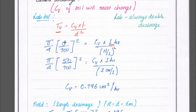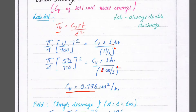Substituting values: TV = π/4 × (U/100)² = π/4 × (50/100)², and CV × 1 hour divided by (H/2)², where H = 2 centimeters. Solving this, we get CV = 0.196 cm²/hour.